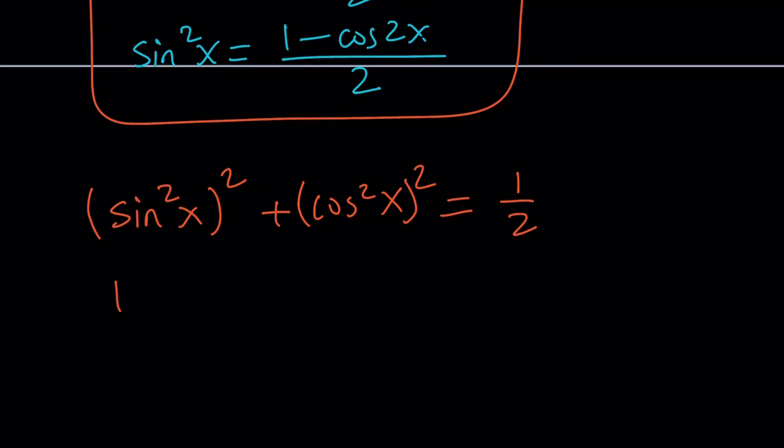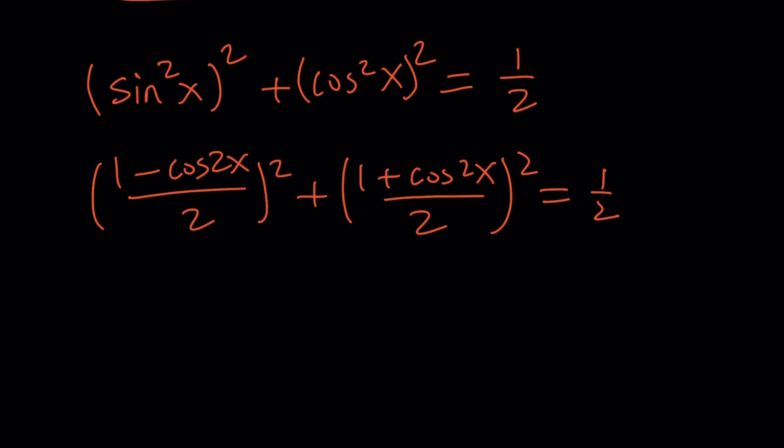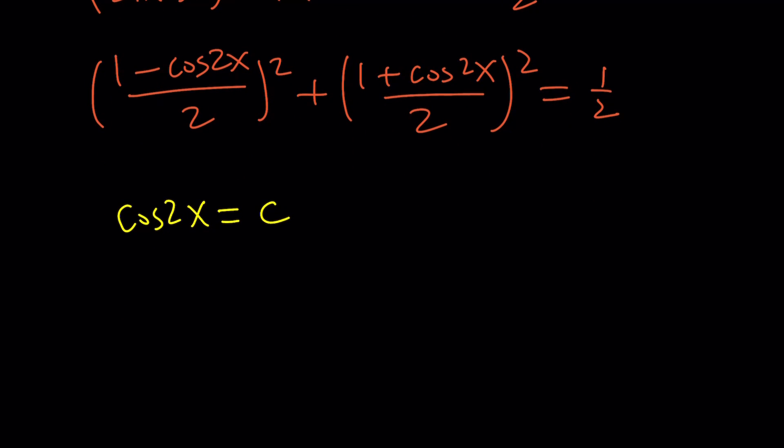So by using this identity, we get this equation, which can be handled with the double-angle formulas. Let's replace sine squared with one minus cosine 2x over two, and cosine squared with one plus cosine 2x over two. And then the rest is pretty straightforward. All you have to do is call cosine 2x something. We're going to use substitution again. Let's go ahead and call this C. And then just plug it in, and you'll get the answer in terms of cosine 2x, and then you can go to x from there.